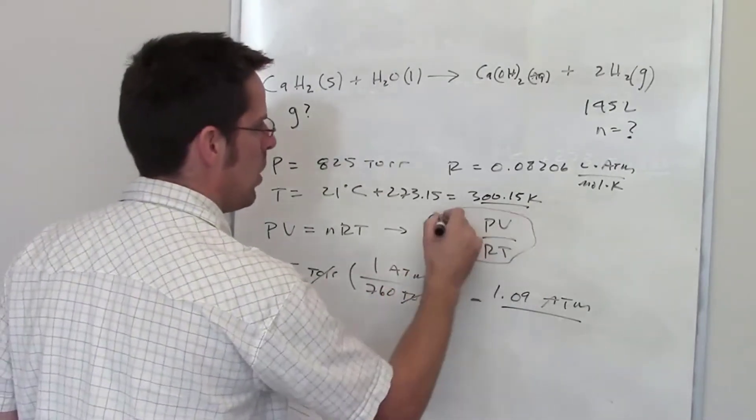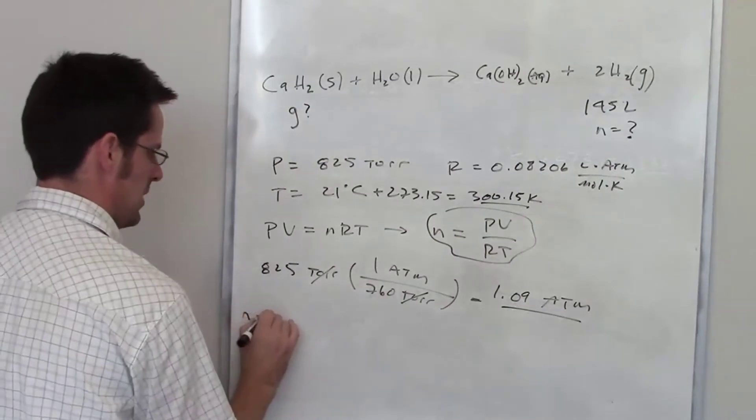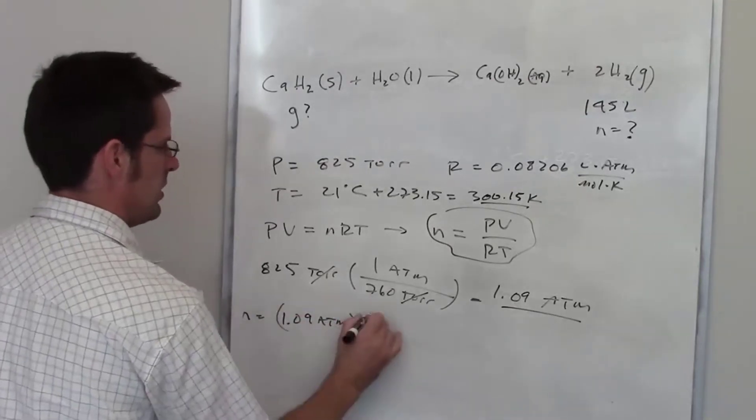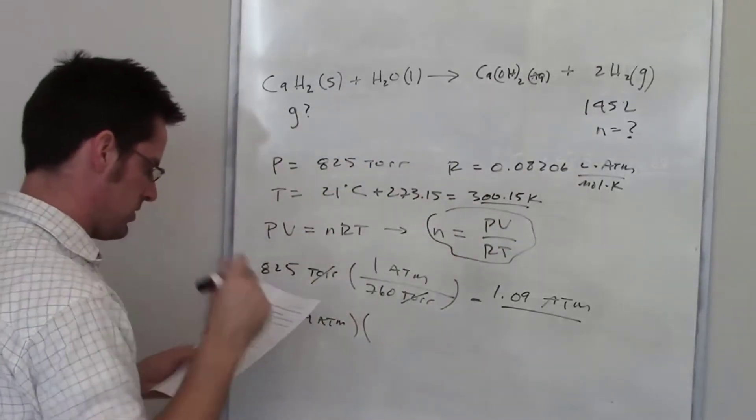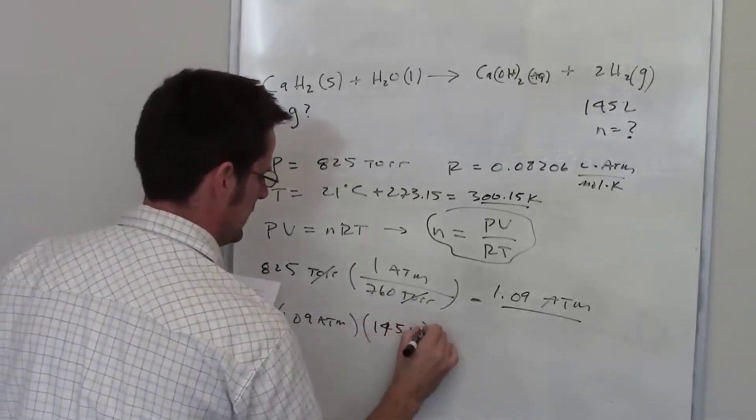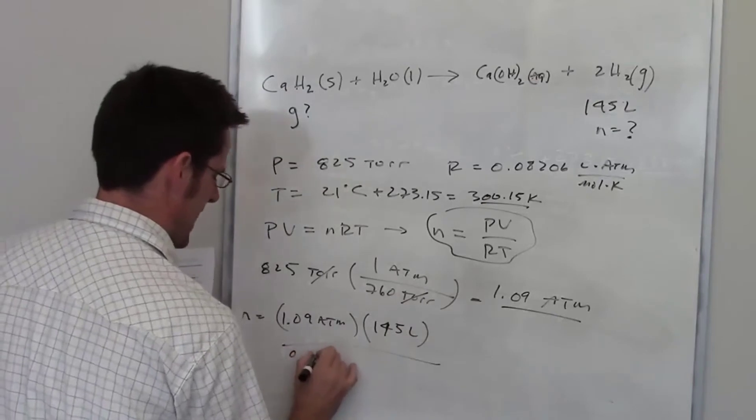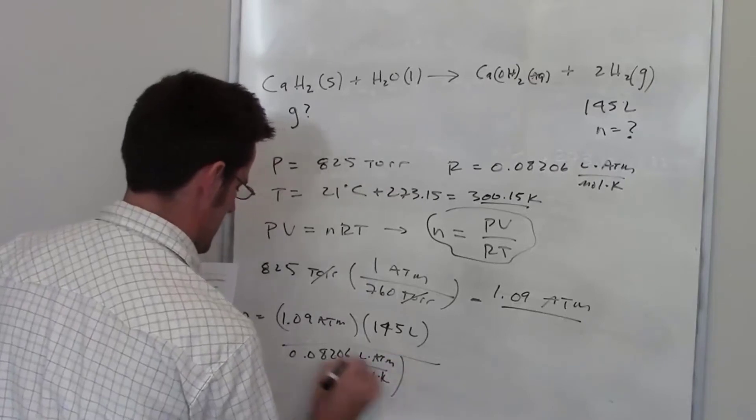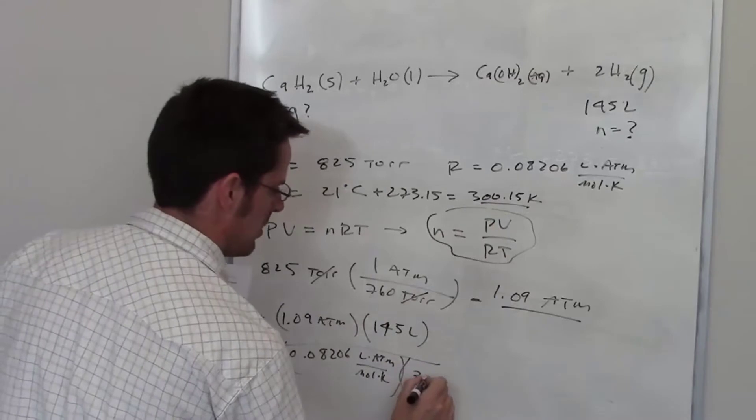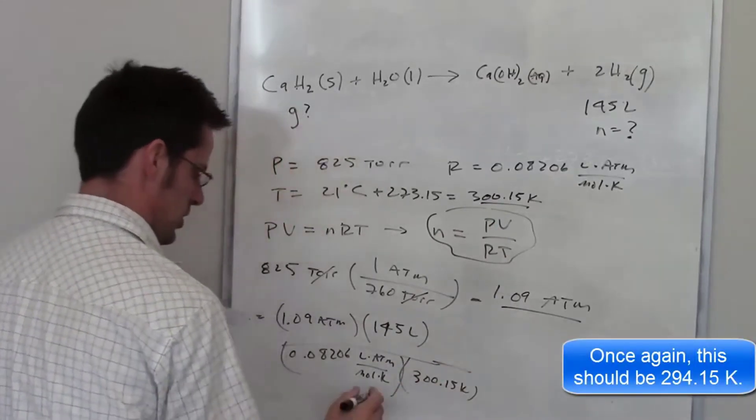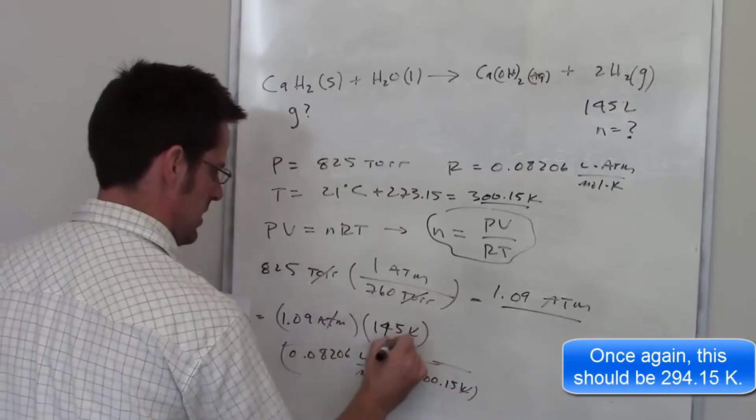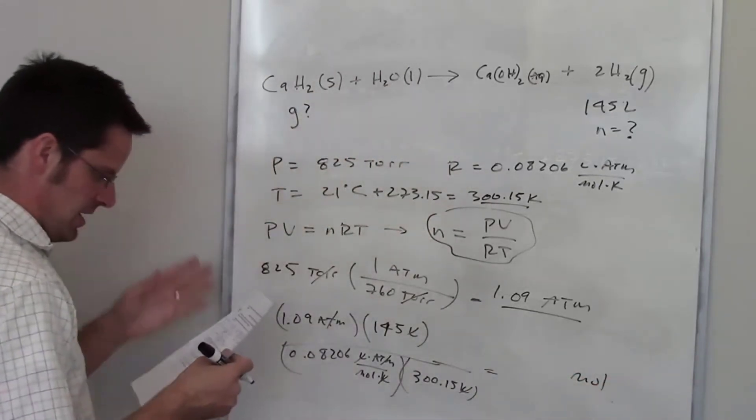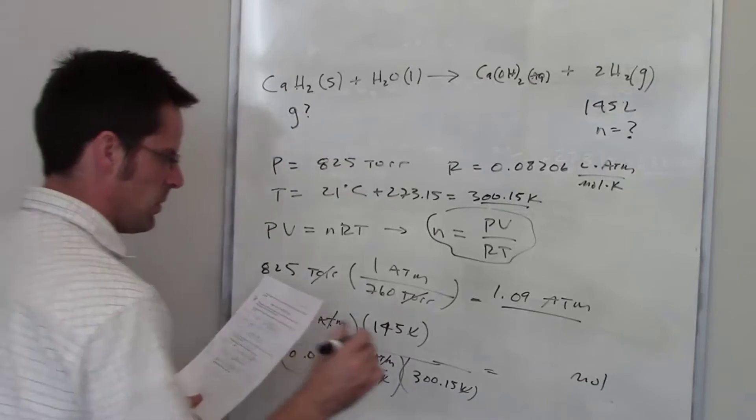I'm going to determine now how many moles of hydrogen gas this is going to be. So n equals pressure—the pressure is 1.09 atmospheres, the volume is 145 liters (that is a large volume), the ideal gas constant is 0.08206 liter atmospheres per mole Kelvin, and the temperature is 294.15 Kelvin. I should have all my units cancel out. It should leave me with moles.